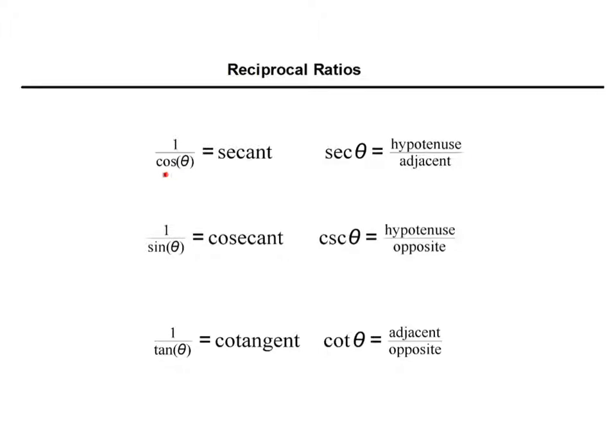One over sine is cosecant. It is abbreviated CSC. That's hypotenuse over opposite.